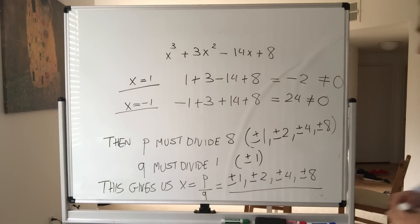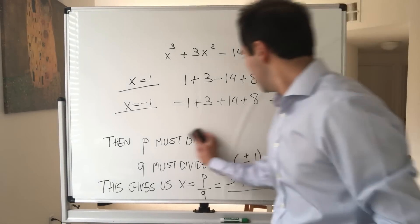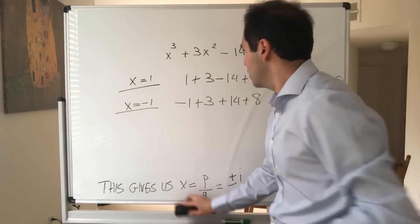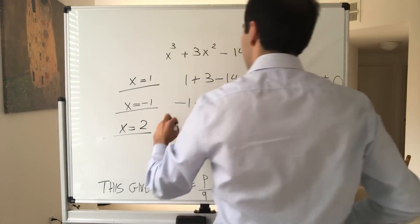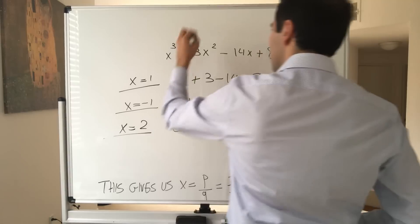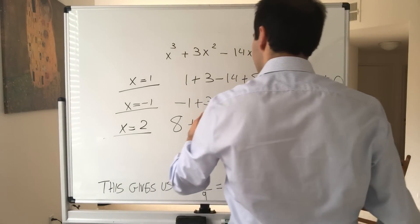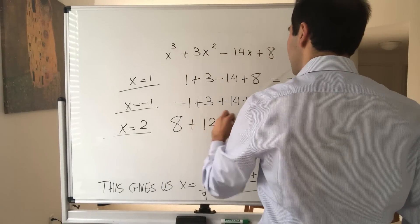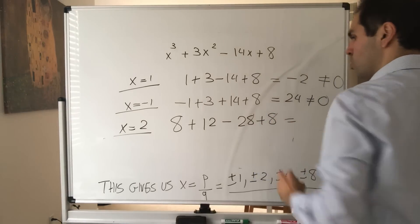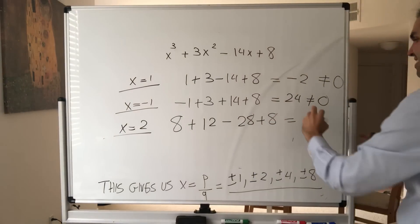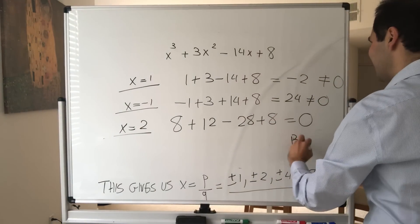Let's try 2. So 8 + 3 times 2 squared, which I believe is 12, and then -28 + 8. So 20 + 8 - 28 equals 0. Bazinga!